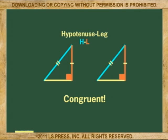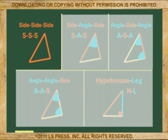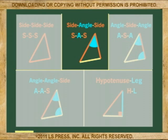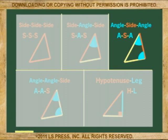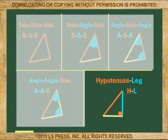Reviewing triangle congruency, we say triangles are congruent by side-side-side, by side-angle-side, by angle-side-angle, by angle-angle-side, and in right triangles, by hypotenuse-leg.